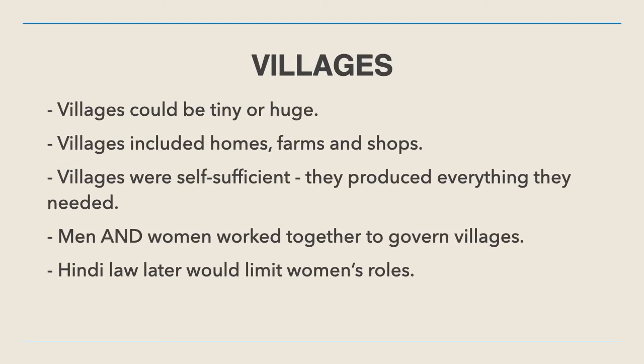Villages could vary quite a lot — some were tiny with just a handful of houses, while others could be a huge village or even like a city with hundreds of houses and buildings. Cities were typically laid out with a city centre containing homes, shops, and government buildings, and then farms around the outside of the centre.